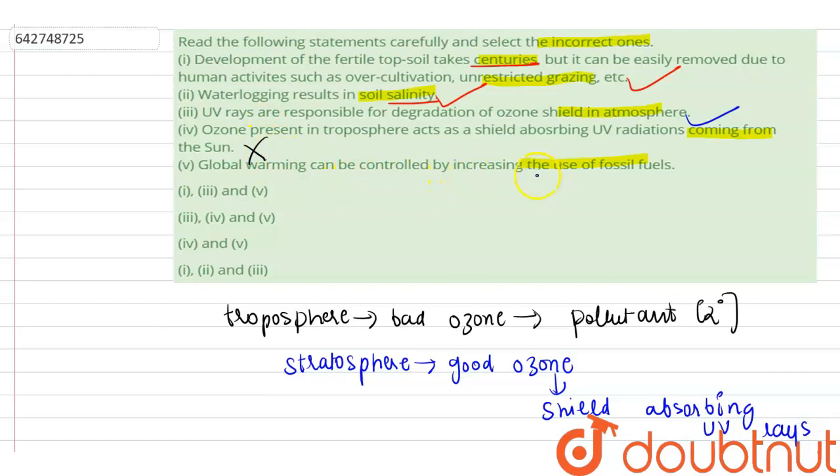Global warming can be controlled by increasing the use of fossil fuels. This statement is also incorrect because global warming cannot be controlled by increasing the use of fossil fuels, as fossil fuels themselves are responsible for global warming.